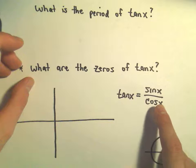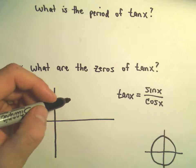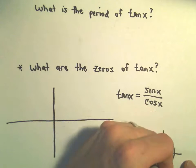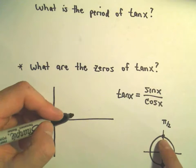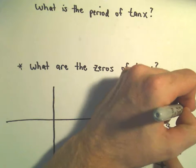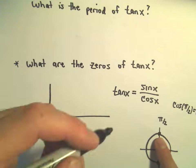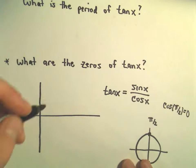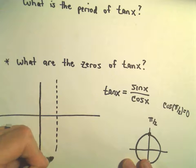Whenever the denominator, whenever cosine equals 0, that's where we're going to get vertical asymptotes. Cosine has to do with the x-coordinate on the unit circle, and that's going to happen at π over 2. Cosine of π over 2 equals 0, so we're going to end up getting 0 in the denominator if we plugged in π over 2. That means we have an asymptote here at π over 2.